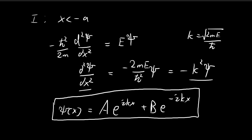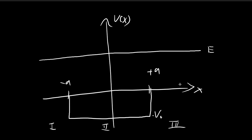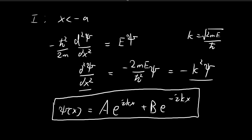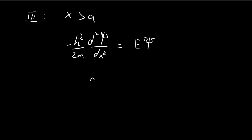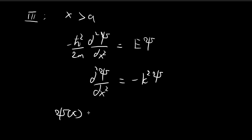For Region 3, where x is larger than A, the potential is again zero. We get the same differential equation as Region 1: d²ξ/dx² = -k²ξ, with k defined the same way. So ξ(x) equals some constant F·e^(ikx) plus another constant G·e^(-ikx).